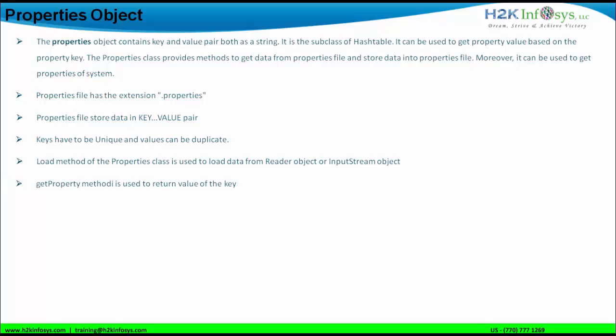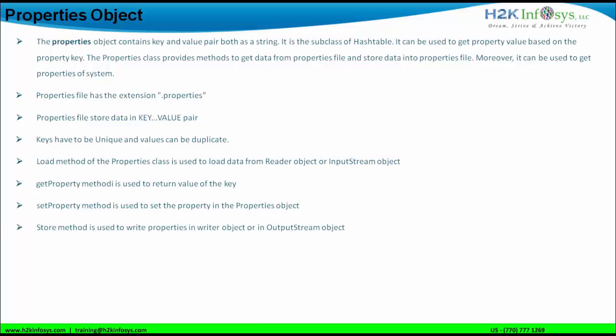We can use the getProperty method after loading the data. Using the getProperty method, we can get the value of the key present in the properties file — the getProperty method will be used to return the value of the key. Similarly, like the getProperty method, we have a setProperty method. The setProperty method will be used to set the property of the properties object. And there is one more method called the store method.